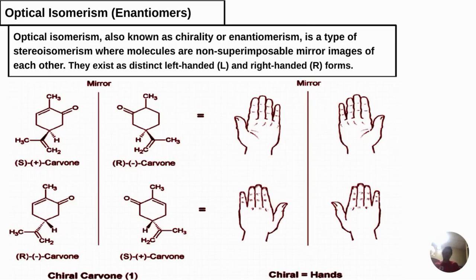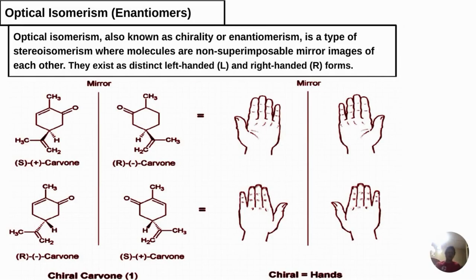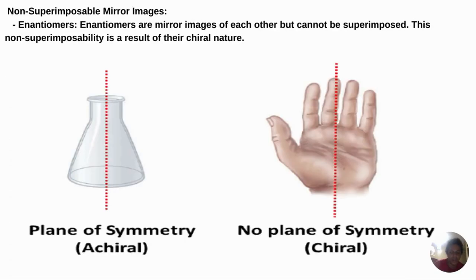Now we have to understand optical enantiomers, which we will explain deeply in stereochemistry. When we talk about optical enantiomers, we are talking about molecules that are mirror images of each other. If you think of your two hands — the right hand is a mirror of your left hand — but they are non-superimposable, meaning they can never be perfectly overlaid. We need to understand the notation S, L, and R. L means the left hand, while R means the right hand.